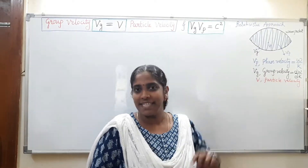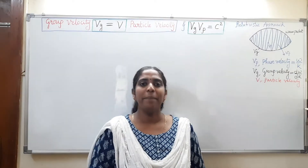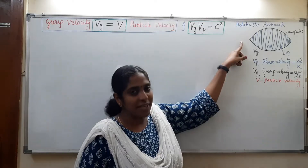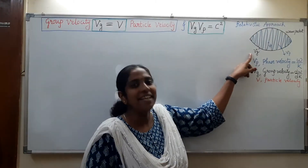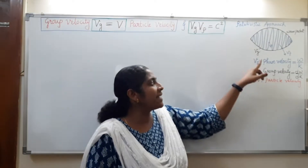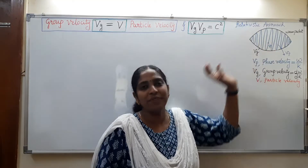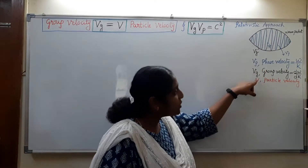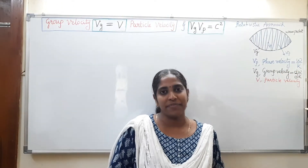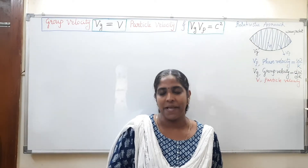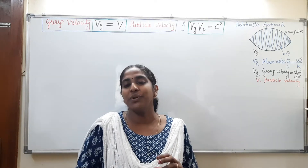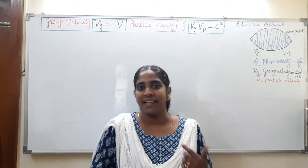When a particle is moving with a velocity v, it is equivalent to a wave packet, and this wave packet is related with two velocities. One is the group velocity vg — the velocity with which the entire wave packet, that is the group of waves, is moving. The other is the phase velocity vp — the velocity of each single wave. This phase velocity and group velocity are closely related with two important terms: omega and k. Omega is the angular frequency and k is the propagation constant or wave vector, which are in turn closely related with the physical quantities energy and momentum.